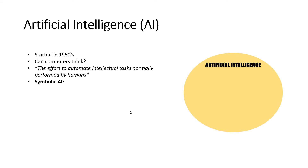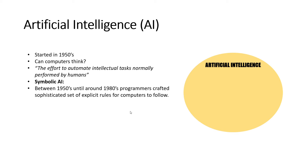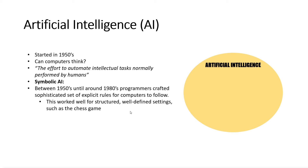At the beginning we had symbolic AI, which started in the 1950s and flourished until the 1980s, in which programmers crafted a sophisticated set of explicit rules for computers to follow. This worked really well for structured, well-defined settings such as the game of chess. In chess you have a predefined set of rules, so you can think of a game of chess — no matter how long or complicated — as a complex set of if-then arguments.